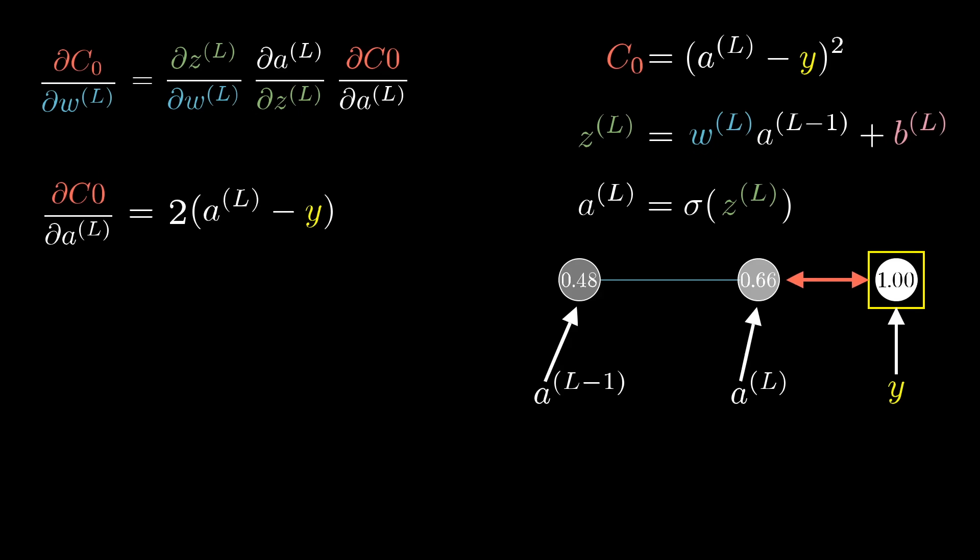Notice this means that its size is proportional to the difference between the network's output and the thing that we want it to be, so if that output was very different, even slight changes stand to have a big impact on the final cost function. The derivative of a^l with respect to z^l is just the derivative of our sigmoid function, or whatever non-linearity you choose to use.